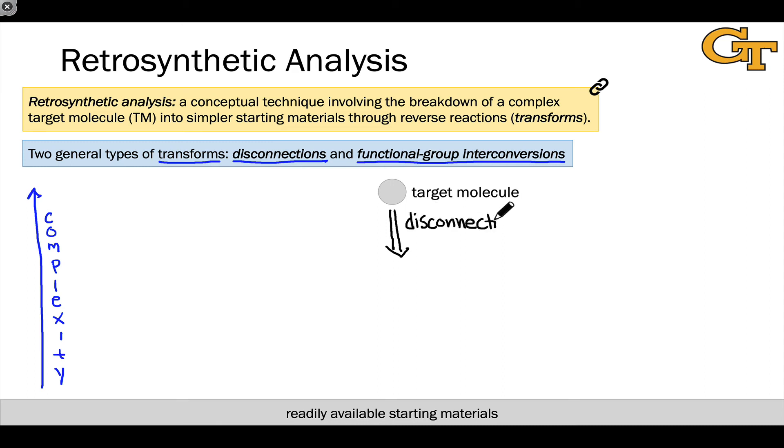The Claisen condensation transform, which we looked at on the last slide, is a great example of this. A carbon-carbon bond is made in the forward direction or disconnected in the reverse direction. And so the Claisen condensation is definitely a disconnection transform. It's producing two simpler ester molecules in the reverse direction from a more complicated beta-keto ester target.